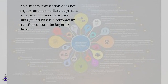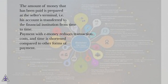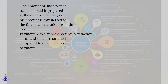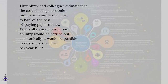An e-money transaction does not require an intermediary, because the money expressed in units called bits is electronically transferred from the buyer to the seller. The amount of money that has been paid is processed at the seller's terminal, and his account is transferred to the financial institution from time to time. Payment with e-money reduces transaction costs, and time is shortened compared to other forms of payment. Humphrey and colleagues estimate that the cost of using electronic money amounts to one-third to half of the cost of paying with paper money.